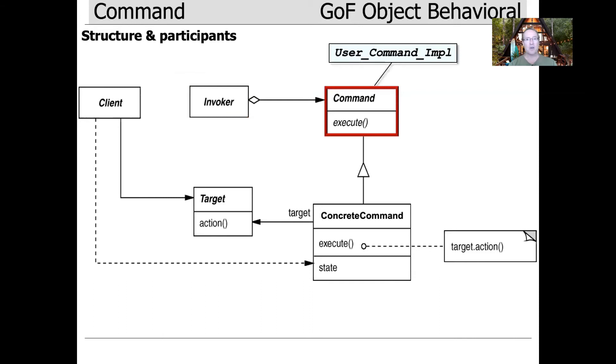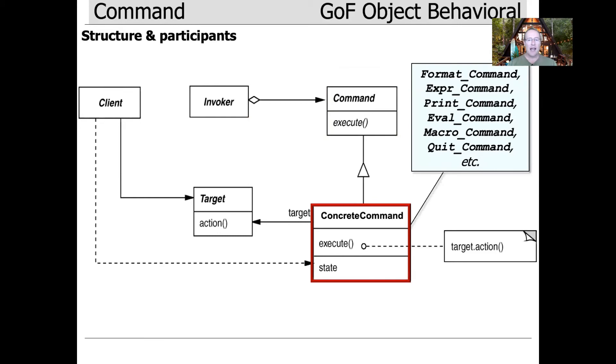The command is the abstract base class. It has an execute method - it could have others like un-execute as well. It's the root of the hierarchy. In our case, that's user command impl. Then we have all the different concrete commands that inherit and extend the command abstract base class: format command, expr command, print command, eval command, macro command, and so forth.